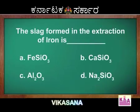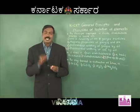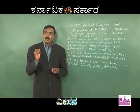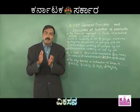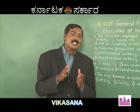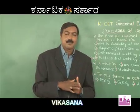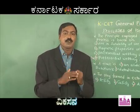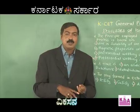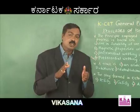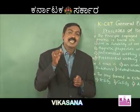The slag formed in the extraction of iron: slag is formed when flux combines with gangue. In the extraction of iron, the charge is a mixture of ore, limestone, and coke. Limestone acts as a flux.